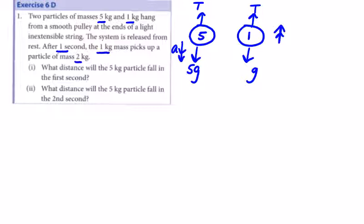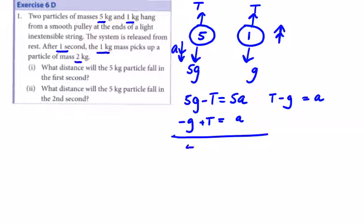Creating our equations, we're going to get 5g minus T equals 5a, and T minus g equals 1a. Solving these, minus g plus T equals a will give 4g equals 6a. So a is going to be 4g over 6, or 2g over 3 meters per second squared.